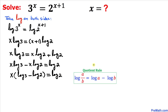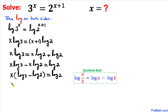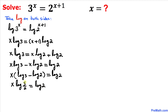Now let's recall the quotient rule. Focusing on the log of 3 minus log of 2 part, this can be written as log of 3 divided by 2. Therefore we can write x times log of 3 divided by 2 equals log of 2.